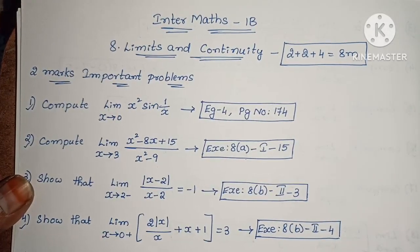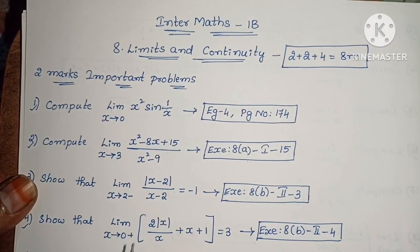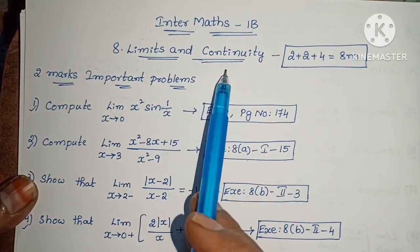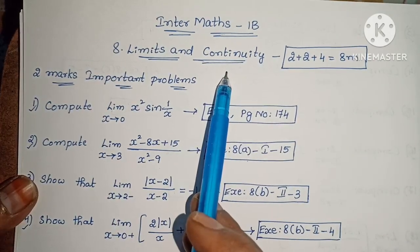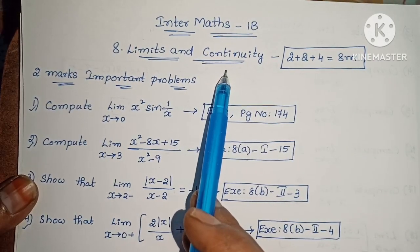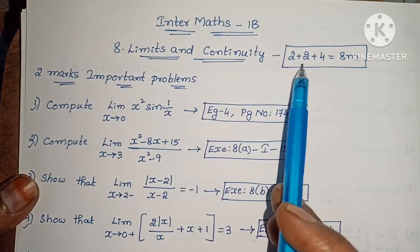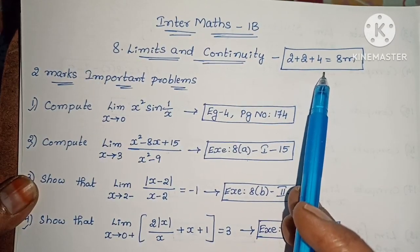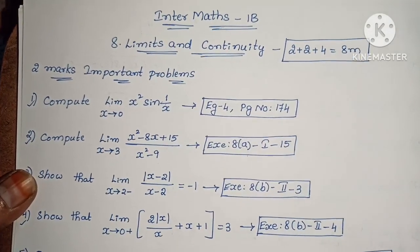Hi! Welcome to Paranekka Maths. This is my video. This is Maths 1, 8th chapter: Limits and Continuity. This chapter has important problems worth 2 marks, 4 marks — a total of 8 marks.